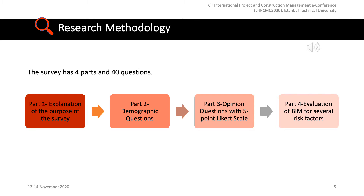Then, opinion questions that have statements regarding utilization of BIM in risk management are presented and evaluated using a 5-point Likert scale: strongly agree, agree, neither agree nor disagree, disagree, and strongly disagree. While preparing these statements, general utilization areas of BIM such as visualization, clash detection, interoperability, transfer of knowledge, coordination and collaboration, alignment of design with scope and budget, controlling revisions, safety and quality management are associated with risk management. In the last part of the survey, the impact and potential of BIM to increase or decrease several risk factors are questioned and evaluated.